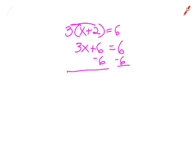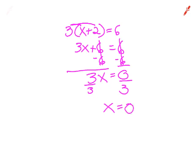6 minus 6 is 0, so I'll have 3x equals 0. Then I'll divide both sides by 3, and that will give me x equals 0. So now I know that x equals 0.